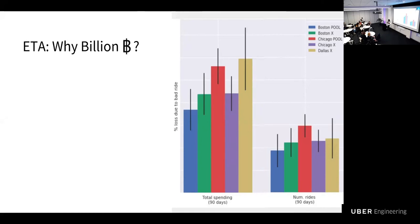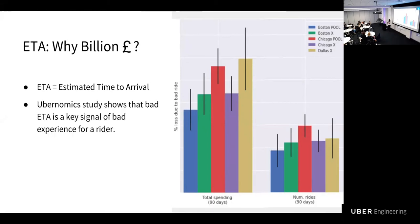I will first spend some time on breaking down the question, what is an ETA? ETA is estimated time to arrival. It's basically the time taken to go from point A to point B. And the second question is, why is it really a billion dollar or currency question across the world? For this, I'm going to refer to a study done by Ubernomics, which showed that bad ETA is a key signal of bad experience to a rider. What is a bad ETA? Bad ETA is when the predicted ETA is really off from the actual travel time.